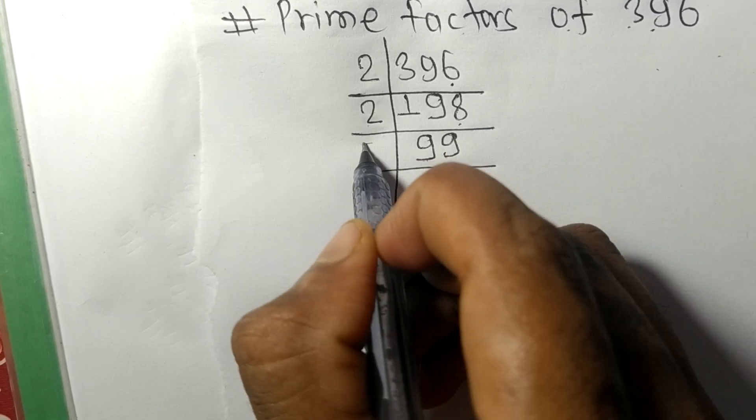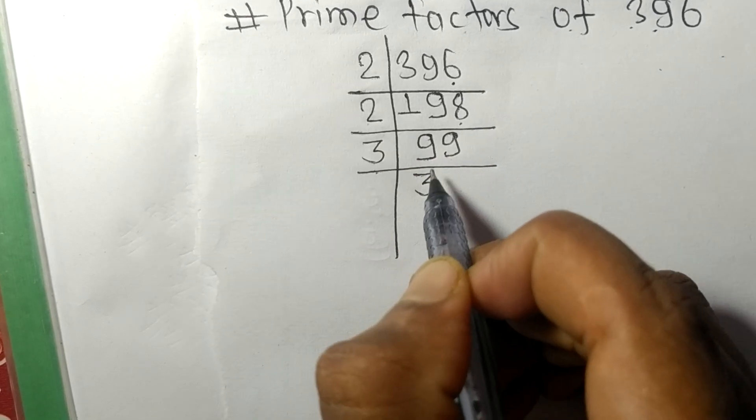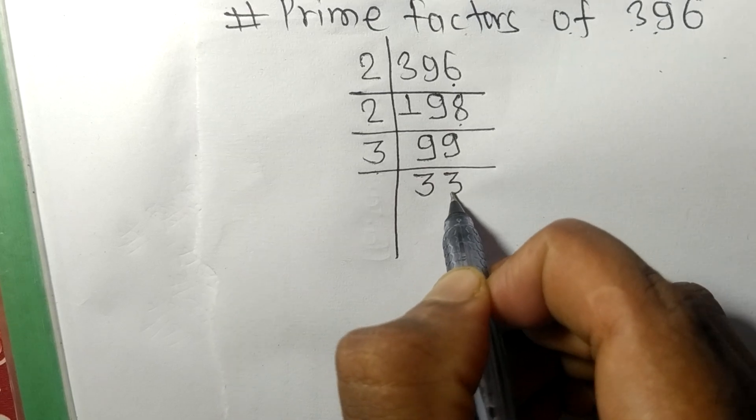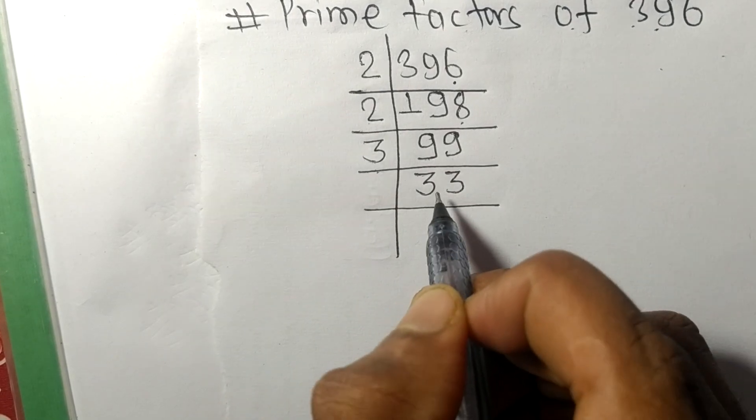99 is divisible by 3. So 3 times 3 equals 9, 3 times 3 equals 9. Now we have 33.